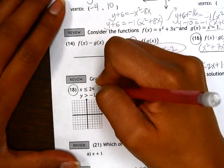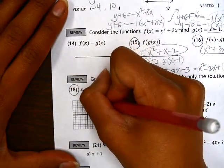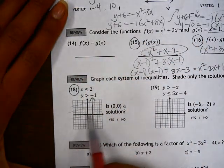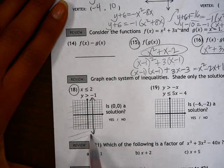X is less than or equal to 2. The line x equals 2 is a vertical line going through 2, and shading less than or equal to would be the left side of that.